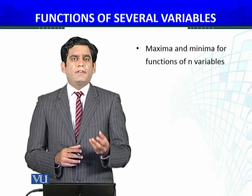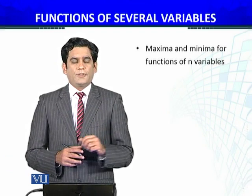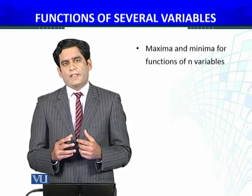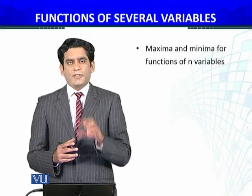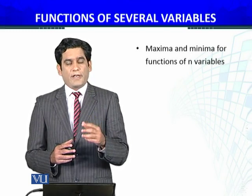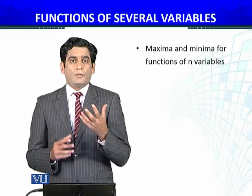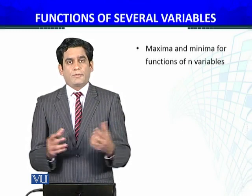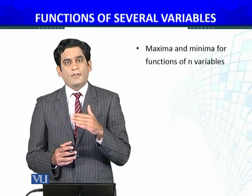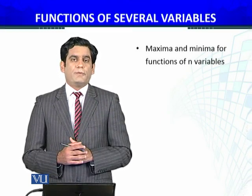For several variables, we have partial derivatives to develop an analogy. The intuition is that if x₀ is in the domain and the maximum or minimum value is local or absolute, then the partial derivatives need to be zero. We will prove this result.